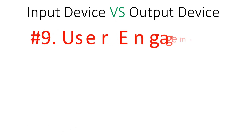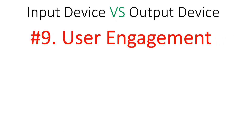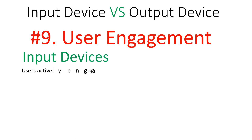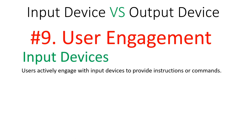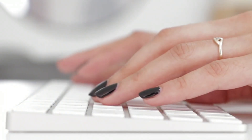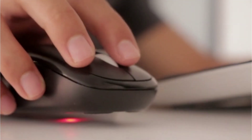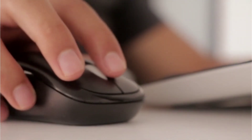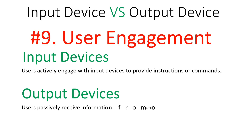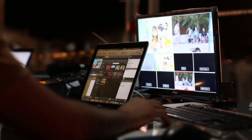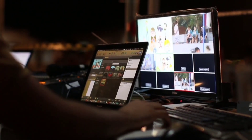Regarding user engagement, users actively engage with input devices to provide instructions or commands to the computer system. In the case of output devices, users passively receive information.